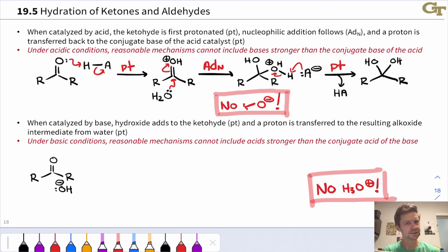So under basic conditions, the situation is different. This hydroxide nucleophile can add directly to the carbonyl carbon to generate an alkoxide intermediate. Now this alkoxide is reasonable under the basic reaction conditions. We know they're basic because hydroxide is listed here and sodium hydroxide catalyst would be listed over the arrow or something like that in a reaction scheme.